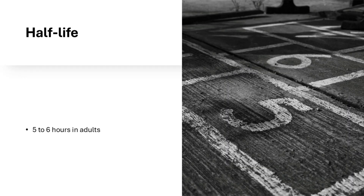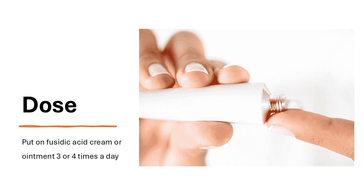Half-life: The terminal half-life of Fusidic Acid ranges from approximately 5 to 6 hours in adults. The dose will be different for different patients — follow your doctor's orders or the directions on the label. Do not change your dose unless your doctor tells you to do so. You will usually apply Fusidic Acid cream or ointment 3 or 4 times a day; check with your pharmacist or doctor if unsure.